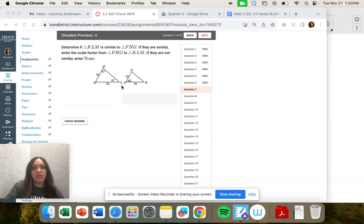Question 7. Determine if triangle KLM is similar to FHG. If they are similar,